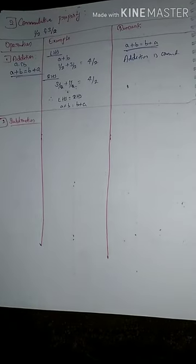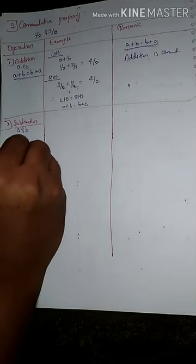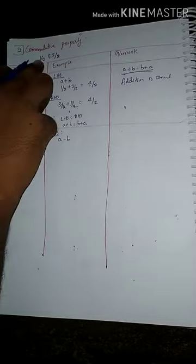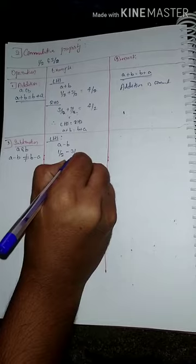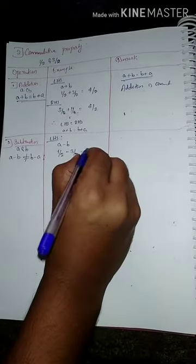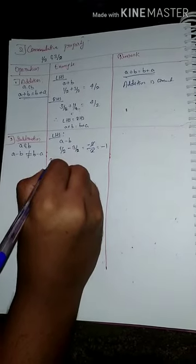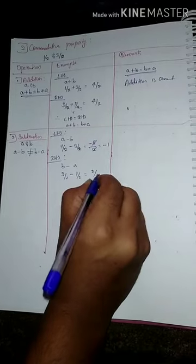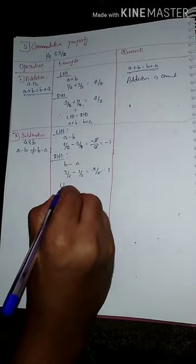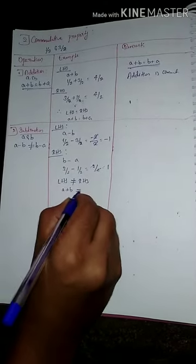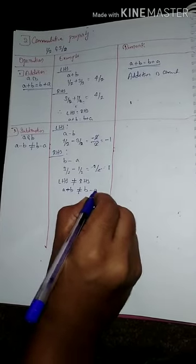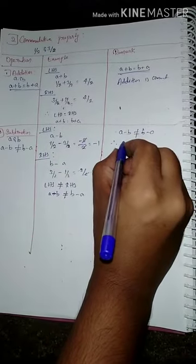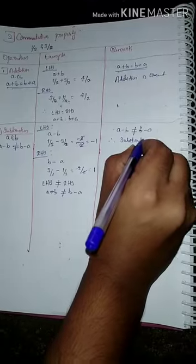For subtraction, for any two rational numbers A and B, A minus B is not equal to B minus A. Taking A as 1/2 and B as 3/2: LHS is 1/2 minus 3/2 equals minus 2/2 equals minus 1. RHS is 3/2 minus 1/2 equals 2/2 equals 1. Since LHS is not equal to RHS, A minus B is not equal to B minus A. Therefore, subtraction is not commutative.